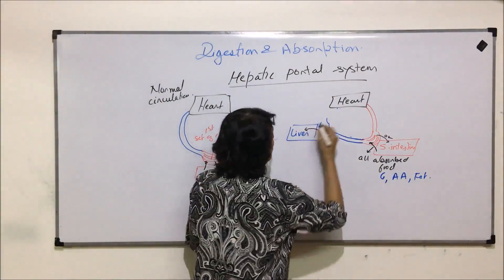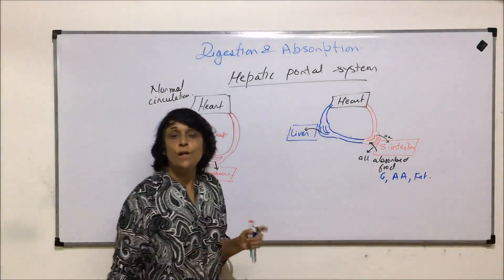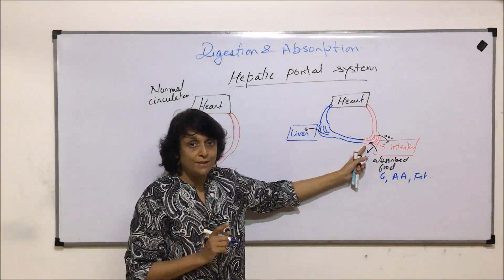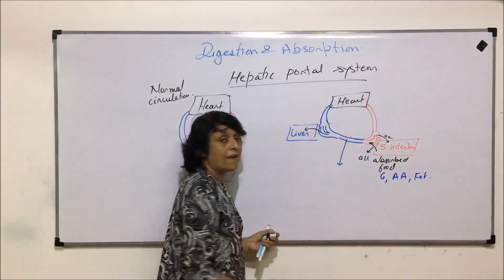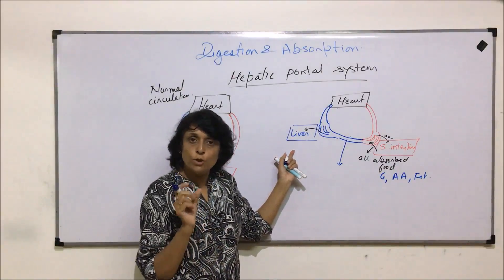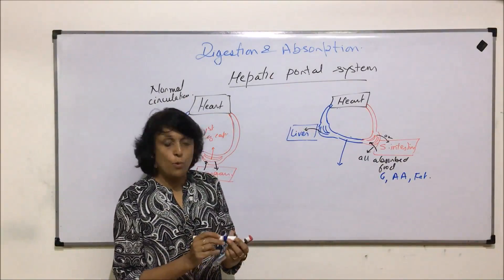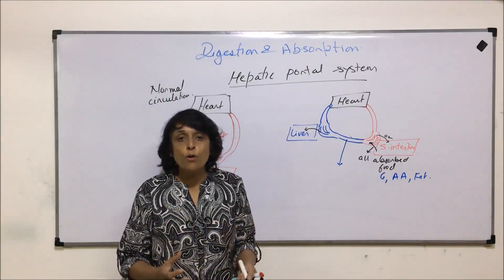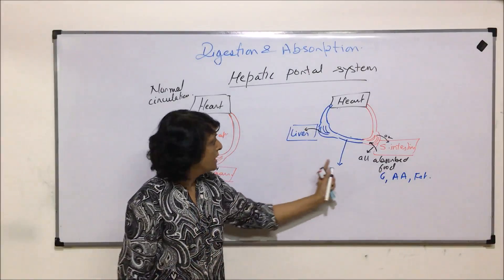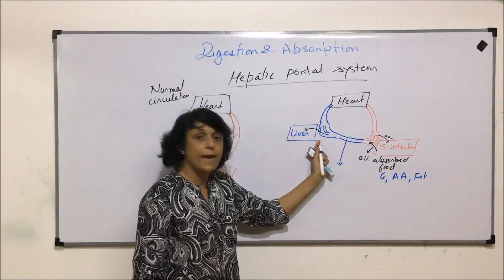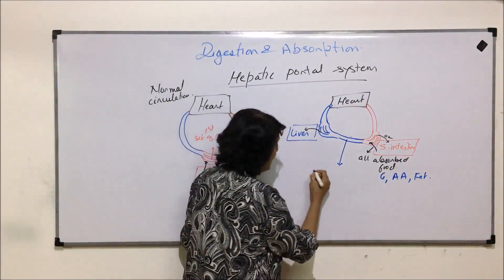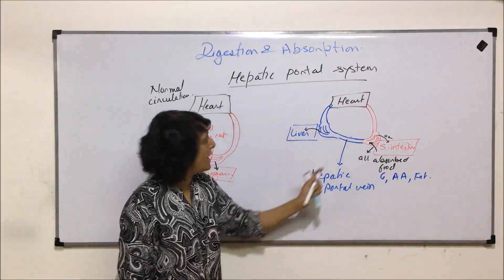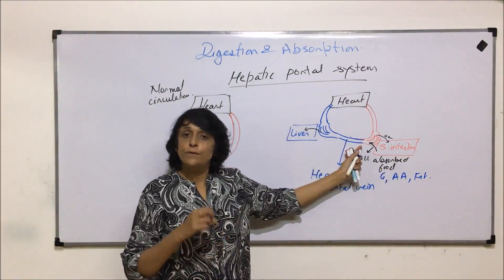The blood, now without all the absorbed material, goes back to the heart. This blood vessel is called a vein because it is formed after the first set of capillaries have united, and it goes to the liver. We use the word 'hepatic' for liver, and 'portal' because a port — like a seaport — is a place where cargo ships offload what they have brought. So this vein offloads all absorbed food in the liver, and that is why it is called the hepatic portal vein.